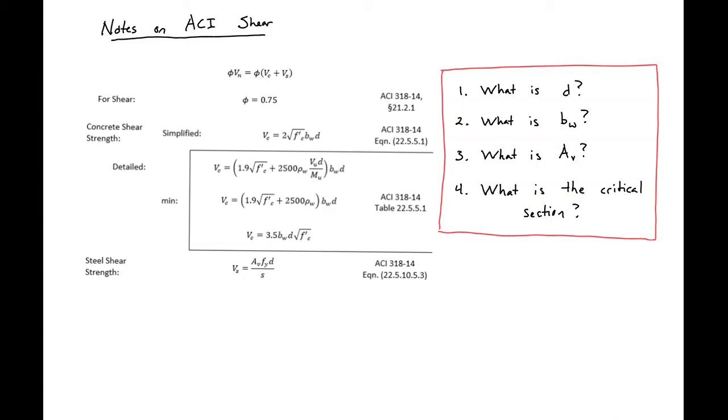In this video we're going to look at several things that we need to know when using the ACI shear provisions. Specifically, we're going to look at what is D. So we see BW times D - what is this D value? We're also going to look at what BW is and what AV is. And then finally, we're going to look at what is the critical section. So what section do we need to find VU such that our VN is greater than VU.